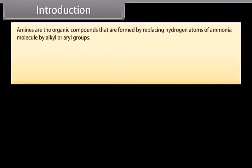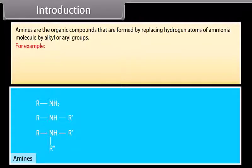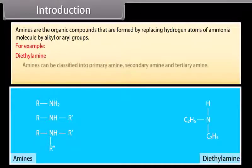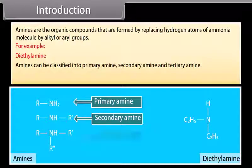Amines are the organic compounds that are formed by replacing hydrogen atoms of an ammonia molecule by alkyl or aryl groups. For example, diethylamine. Amines can be classified into primary amine, secondary amine, and tertiary amine.